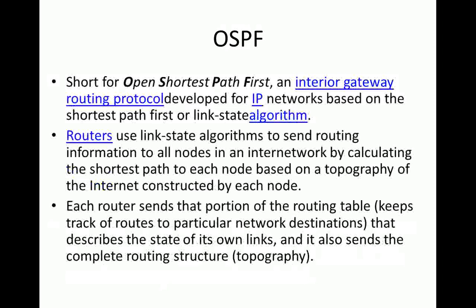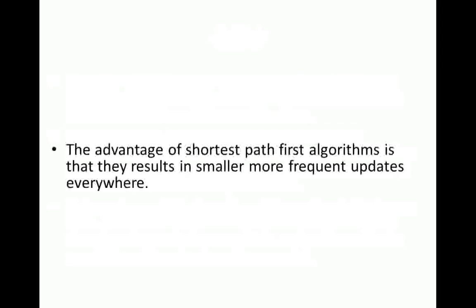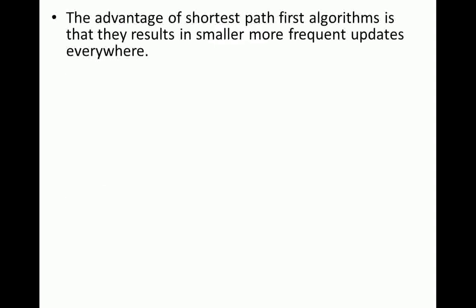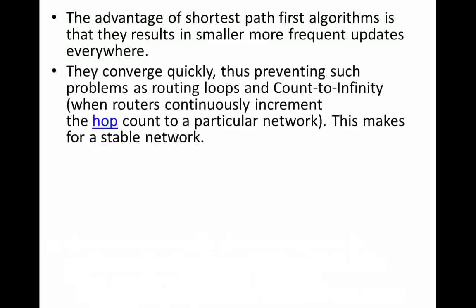Each router sends a portion of the routing table, keeping track of routes to particular network destinations. The second router describes the state of its own links and sends the complete routing topology. The advantage of the shortest path first algorithm is that it results in smaller, more frequent updates everywhere. It converges quickly, thus preventing problems such as routing loops and count-to-infinity when a router continuously increments the hop count for a particular network.